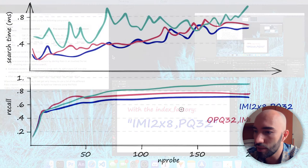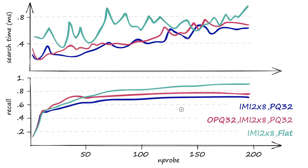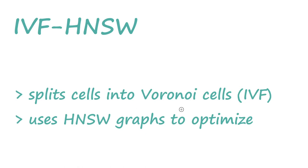Looking at the performance chart for Multi-D ADC: the magenta line is what we just built, the blue line is the non-optimized version, and I've included the flat index for comparison. The flat index is slower and has high memory requirements. The Multi-D ADC index is incredibly small — not as small as IVF PQ, but still pretty small.